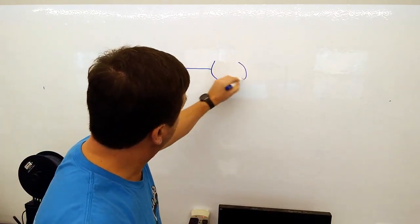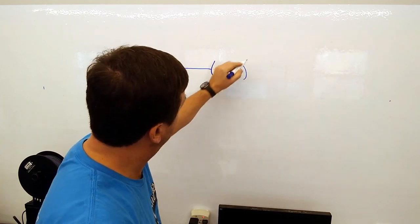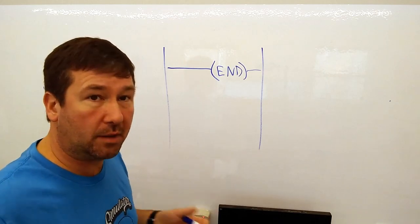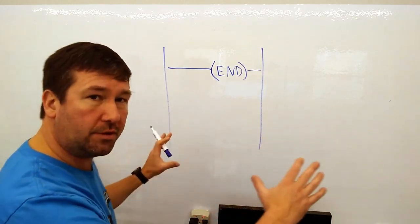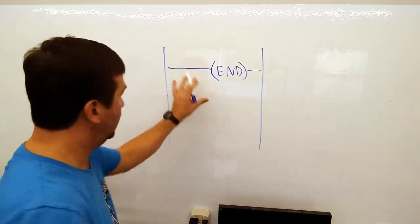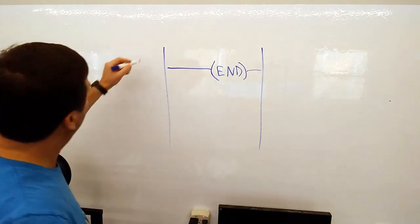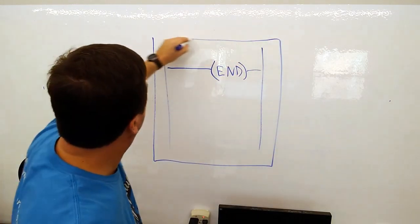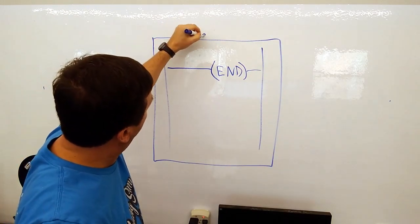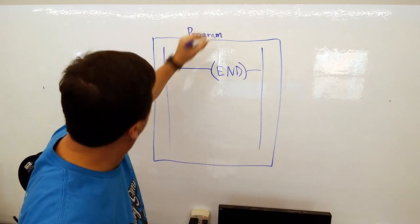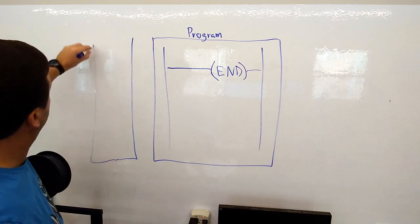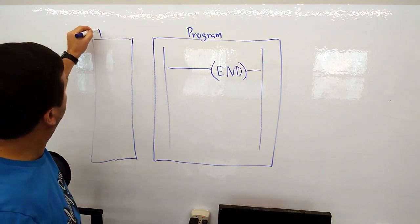So the program that's running in there right now is pretty much this. A lot of people would say that this program can do nothing, but it can do something because there's more to a PLC than simply what you see in the ladder. In fact, what we would call this program, but over here you have your inputs.